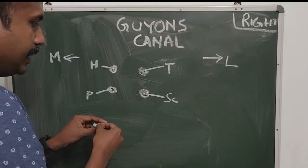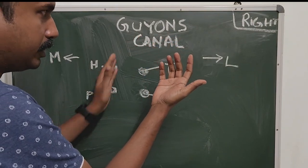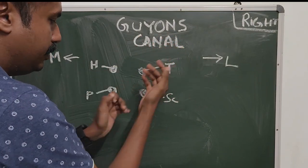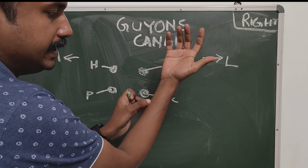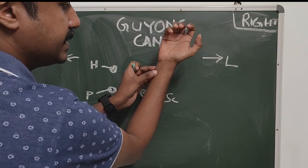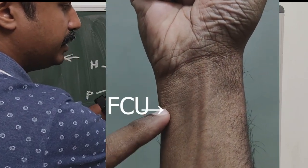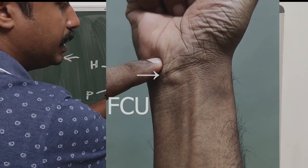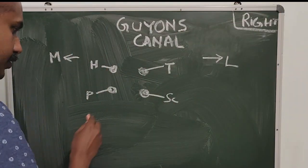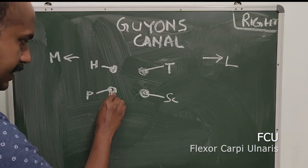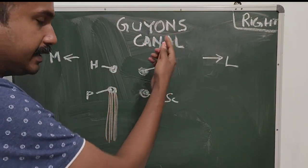Among the carpal bones, you have the pisiform over here — a very important bone to understand the Guyon's canal. Pisiform is what you palpate in the distalmost aspect of the flexor carpi ulnaris. In the wrist you can palpate the flexor carpi ulnaris as a ridge here, and distally you can palpate the pisiform bone. This is the FCU, and in the distalmost aspect you have the pisiform bone.